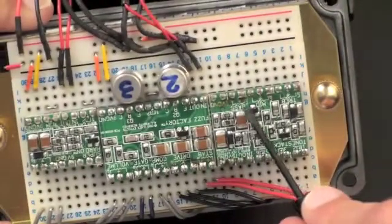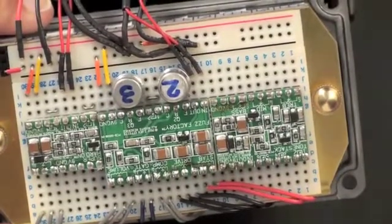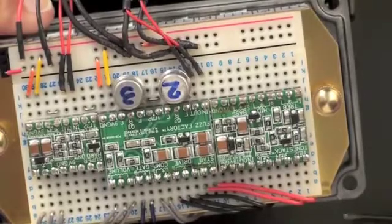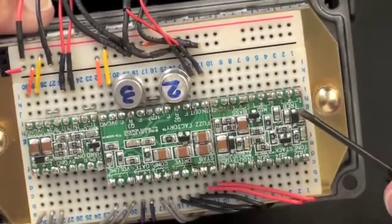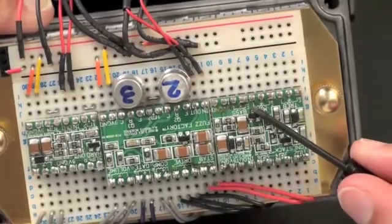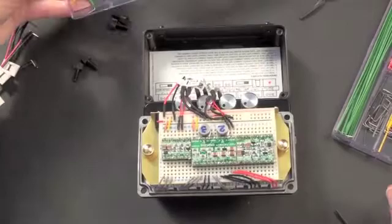And then the base, mid-range, and treble connections. Now we put the base, mid-range, and treble controls on the opposite side from the fuzz factory and super hard-on so that we could use the other row of knobs, the lower row of knobs. It's easier to wire it up—you don't have to run the wires over the top of the module.